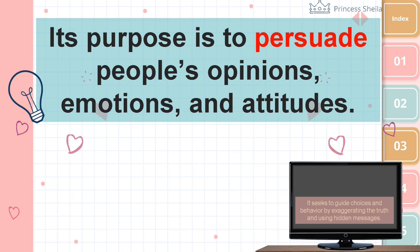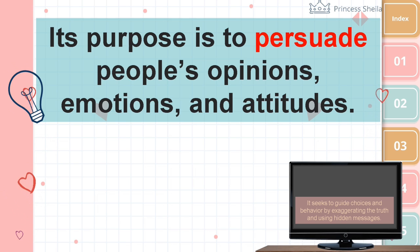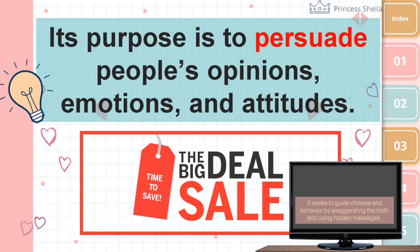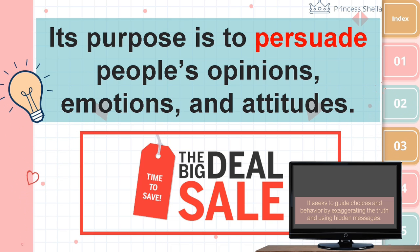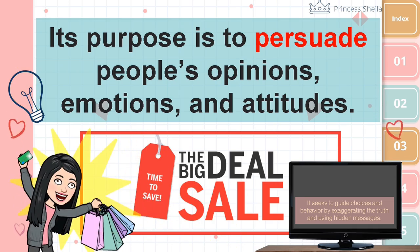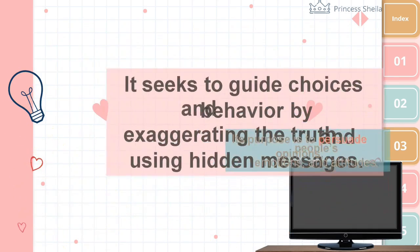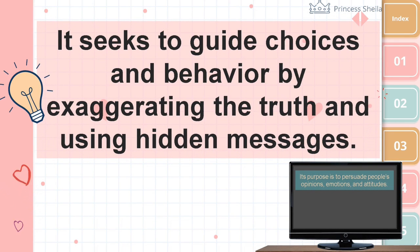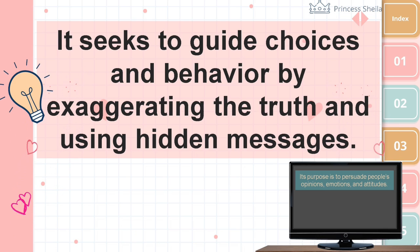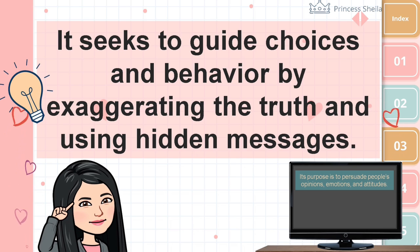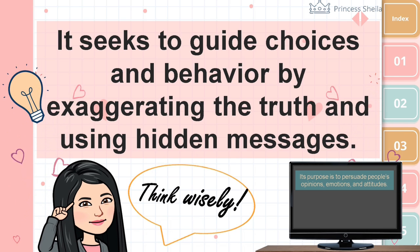For example, you plan to buy only what you need in the supermarket. Suddenly, a sales lady approaches you and tells you that their big sale promo was about to end that day. So you ended up buying more than you needed. Propaganda seeks to guide choices and behavior by exaggerating the truth and using hidden messages. So we should always think wisely in order to pick the right choice.